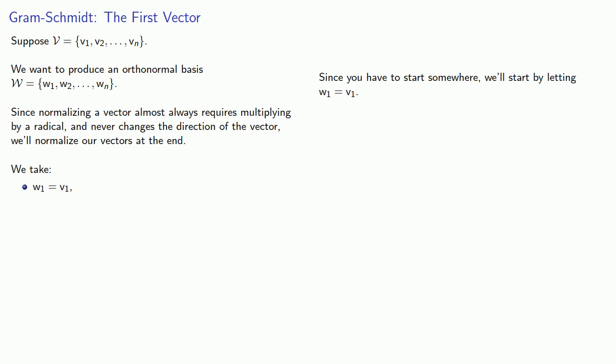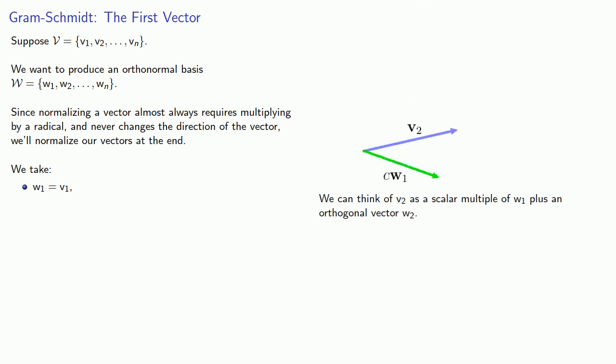And we can think about this as the first vector in our orthogonal basis. We want a second vector w2 to be orthogonal to w1. And here's the important concept. If v2 is already orthogonal, we can let w2 equal v2 and be done. But if not, we can remove the part of v2 that is parallel to w1. And here's what that geometry might look like.